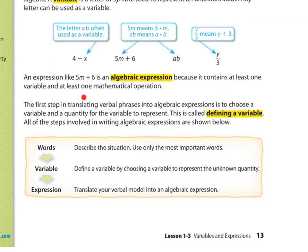All of the steps involved in writing algebraic expressions are shown below. First we look at the words. Describe the situation. Then we find a variable. We have to define a variable by choosing a variable to represent the unknown quantity. X, M, whatever. And then we write the actual expression. Translate your verbal model, your words, into algebraic expression, into numbers.